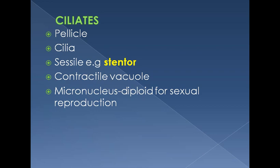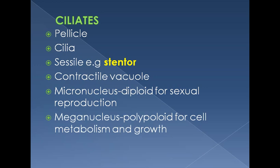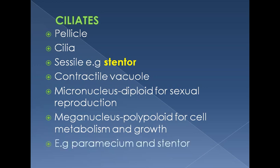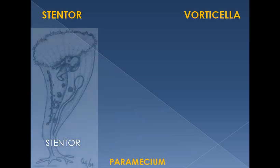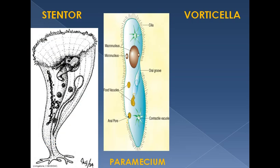There are two types of nuclei in ciliates as seen in Paramecium: the micronucleus, which is smaller and controls sexual reproduction, and the macronucleus, which is polyploid — meaning having many sets of chromosomes. Normally, diploid means having two sets of chromosomes, as in humans (two sets of 23 chromosomes). In Paramecium, the micronucleus is diploid while the macronucleus is polyploid and is used for metabolism and growth. Examples are Paramecium and Stentor.